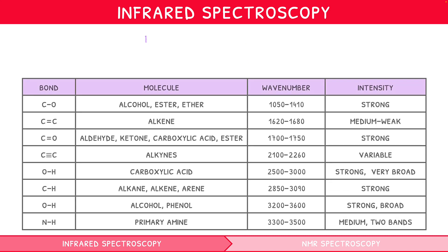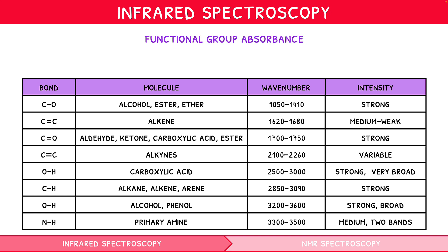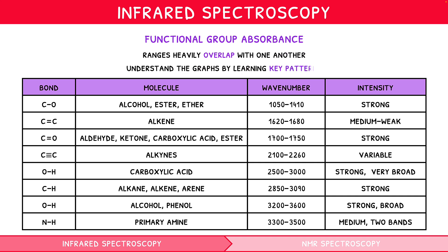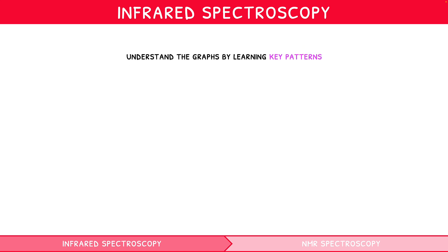Each functional group expresses absorbance across a range of wave numbers, as stated in the data booklet. However, learning such ranges is pointless, as they overlap with one another, and you can understand these graphs by learning key patterns. However, don't forget they're there — you could be asked for the range of wave numbers over which a functional group absorbs infrared radiation.